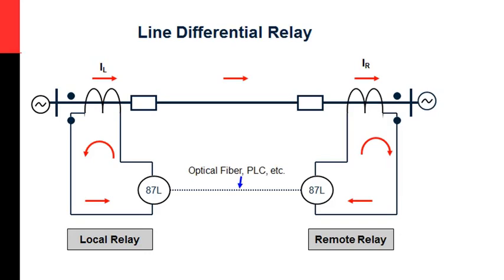For that, they need to talk to each other, and they need to see the magnitudes on both ends of the line in order to determine whether the fault is inside of the line or outside of the protection zone. The only way to ensure that you are testing such a scheme is to have signals applied to both relays at the same time in order to simulate either a fault inside or outside the protection zone, and determine whether the relays are operating properly or not.